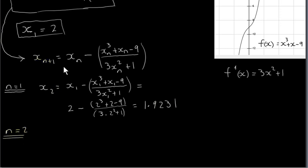So if we let n equal 2 in this formula, we get x of 2 plus 1 or x3 equals x2 minus x2 cubed plus x2 minus 9 divided by 3x2 squared plus 1. And what we do is we plug 1.9231 in for x2 and calculate all of this to get x3. So if you go through all that calculation to four decimal places, you will get 1.9202.